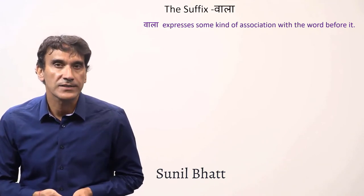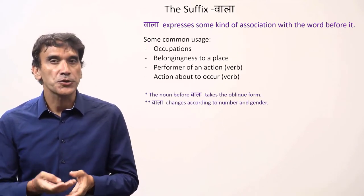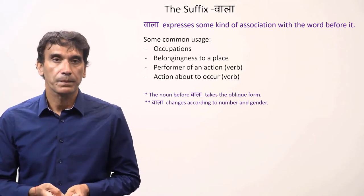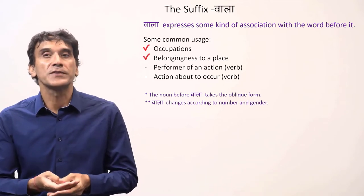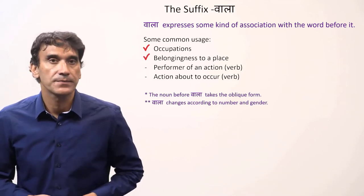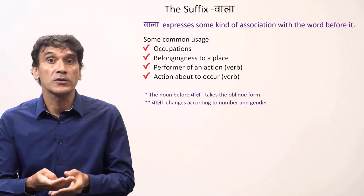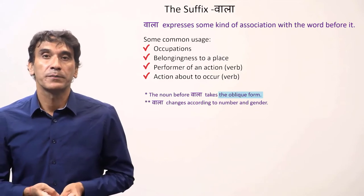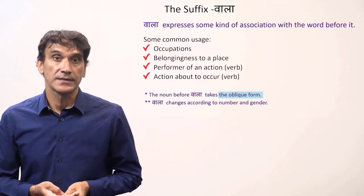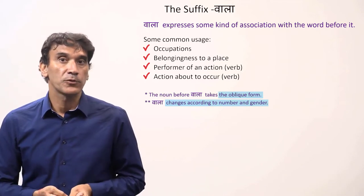The next grammar point is the suffix 'vala.' The suffix vala is a very interesting and useful tool in Hindi. It goes with a noun in oblique form and shows some kind of association with the noun. It is found in professions and occupations, used with place names to show belongingness, and with verbs it shows the performer of an action or expresses a near future action. The word before vala is in oblique case, and vala changes according to number and gender — the feminine form is 'vali' and masculine plural is 'vale.'